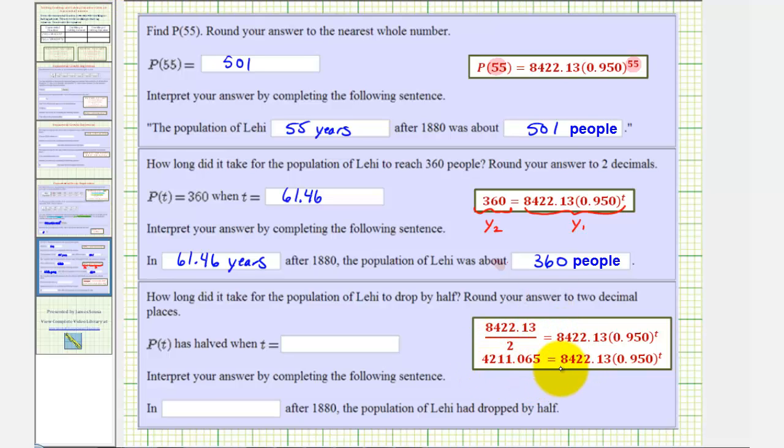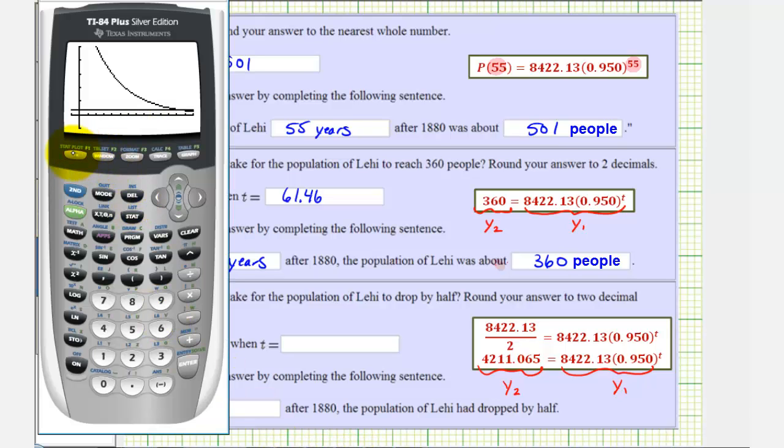And again, to do this graphically, since we already have this in y1, we'll enter this constant in y2, and again find the point of intersection to find the value of t. So we'll go back to the calculator one more time, press y equals, go down to y2, clear 360, and enter 4,211.065. And if we go back to the window just for a moment, notice how the y-maximum is more than the function value that we're looking for. So this window should be fine. Let's try it. Let's press graph.